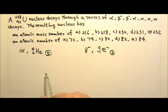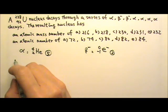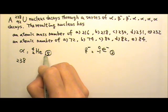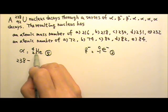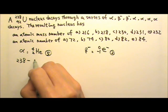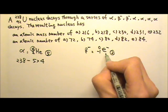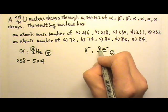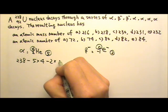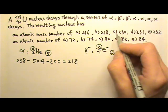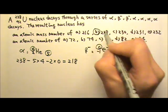So for the atomic mass number, it starts at 238. And then it goes through 5 alphas, so minus 5 times 4, and minus 2 times 0. And this gives us 218. So the answer for this one is B.